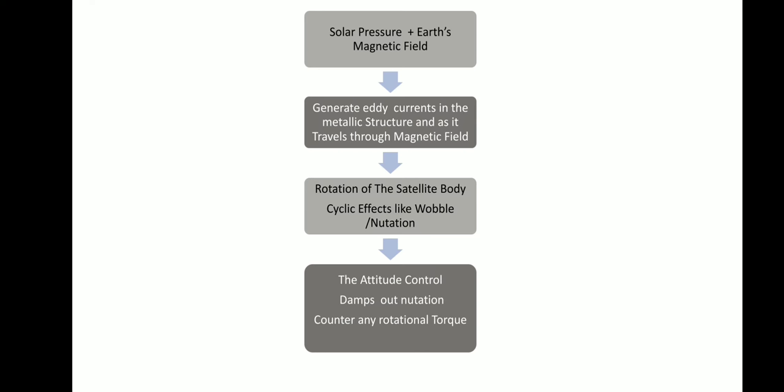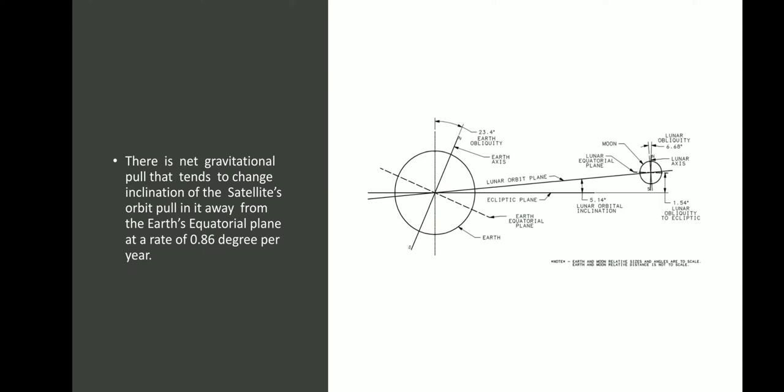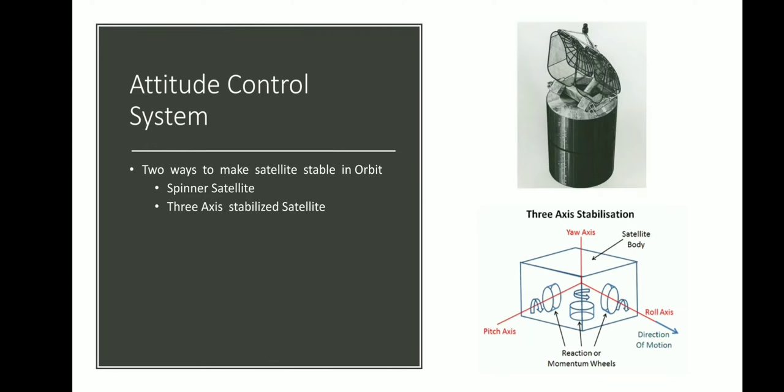These three phenomena — nutation, gravitational inclination drift, and orbital drift toward stable points — affect the position and inclination of the satellite with respect to earth. They are all addressed by the attitude and orbit control system. We split the AOCS into two parts: the attitude control system and the orbit control system.